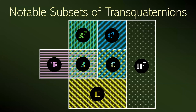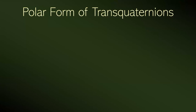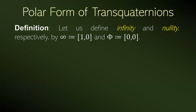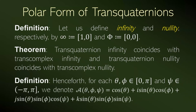We have that all transquaternion numbers have a polar form. First, we define the number infinity — this is the class (1, 0) — and the number nullity — this is the class (0, 0). The transquaternion infinity and nullity coincide with the transcomplex infinity and nullity respectively. Now we will denote the argument of transquaternion numbers. Because quaternions are four-dimensional, they have three angles, and we denote the arguments A, theta, phi, and psi — the polar coordinates of a four-dimensional vector.